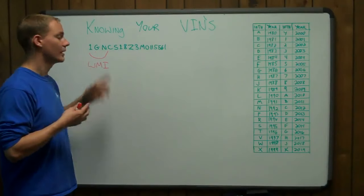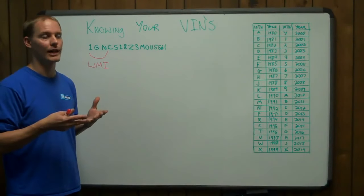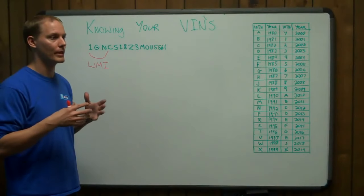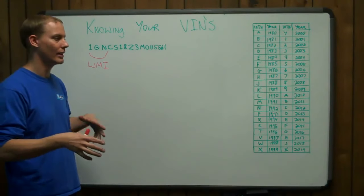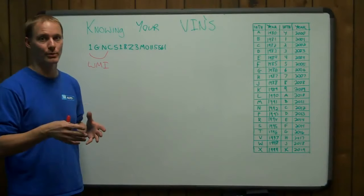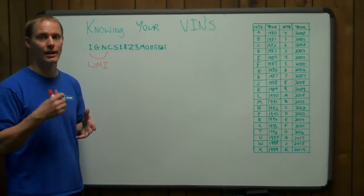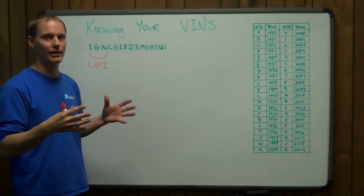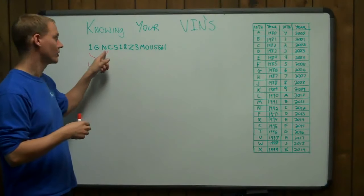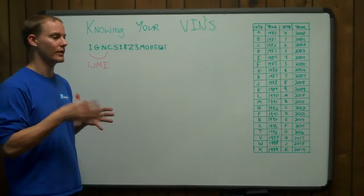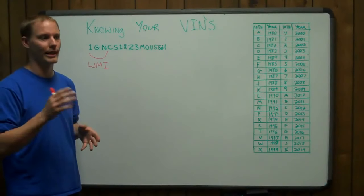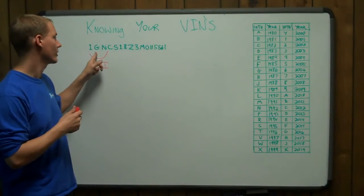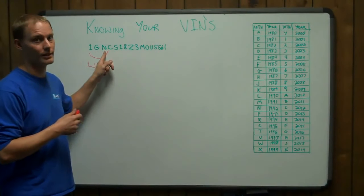The second digit is the manufacturer that made the vehicle. In this case, General Motors has many different divisions. They have Chevy, Buick, Oldsmobile, and several others. This would be the General Motors hat, I guess you'd call it, where division, which is the third digit, is the more specific Buick, Pontiac, Oldsmobile, whatever it is. So in this case, we have United States, General Motors, and Chevy.